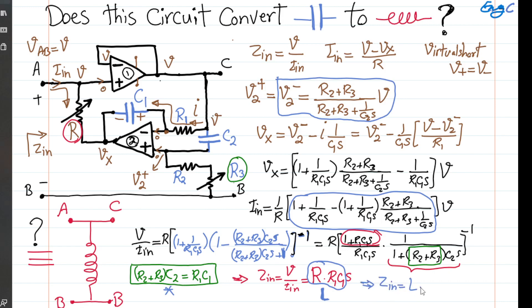In conclusion, we got to the point that Zin is L times S and L is variable. So variable inductance realized with high Q. I hope that this video is helpful.